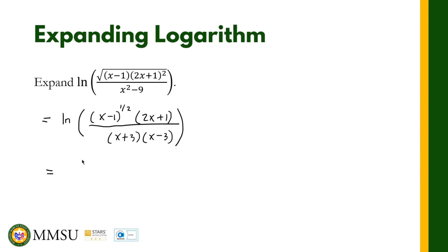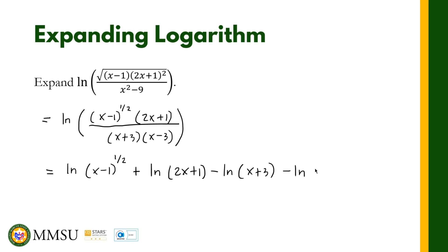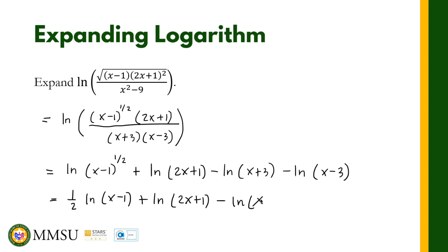Now we can write the expanded form: natural logarithm of (x minus 1) raised to one half, plus natural logarithm of (2x plus 1), minus natural logarithm of (x plus 3), minus natural logarithm of (x minus 3). Applying the power rule, the exponent one half becomes a coefficient: one half natural logarithm of (x minus 1), plus natural logarithm of (2x plus 1), minus natural logarithm of (x plus 3), minus natural logarithm of (x minus 3). That is the expanded form of the given logarithmic expression.